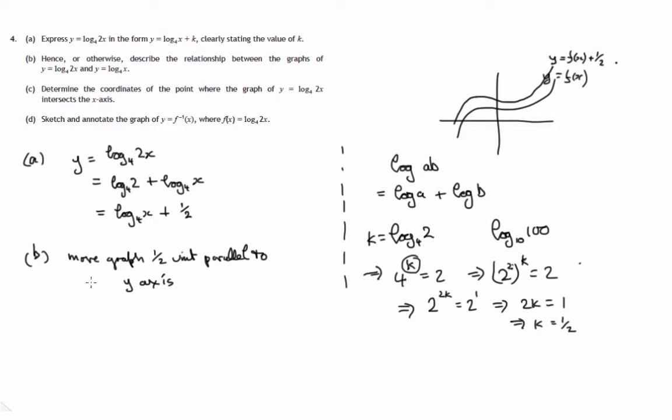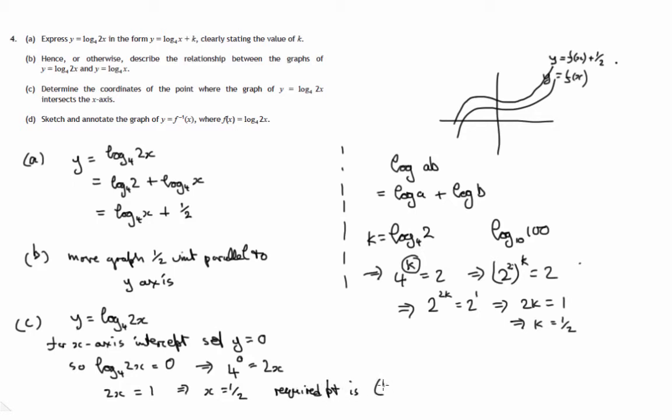So that's part A and part B. Part C, determine the coordinates of the point where the graph of y equals log to the base 4 of 2x, where it intersects the x-axis. So for x-axis intercept, we set y equal 0. So we're looking at log to the base 4 of 2x equals 0. What power do you raise 4 to to get 2x? Answer 0. So if we raise 4 to the power of 0, we get 2x. So this is telling us that 2x is equal to 1. 4 to the power of 0 is 1. And therefore, x equals 1 half. Now they ask for the coordinates of the point where it intersects the x-axis. So required point is 1 half, 0.